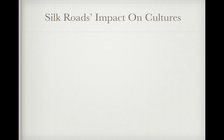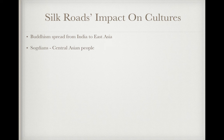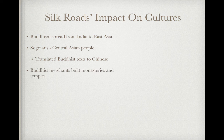So what were the impacts of the Silk Road on cultures? Buddhism is going to spread from India to East Asia. Sogdians — these were Central Asian people — will translate Buddhist texts into Chinese, which will help spread Buddhism. And Buddhist merchants will build monasteries and temples throughout East Asia.